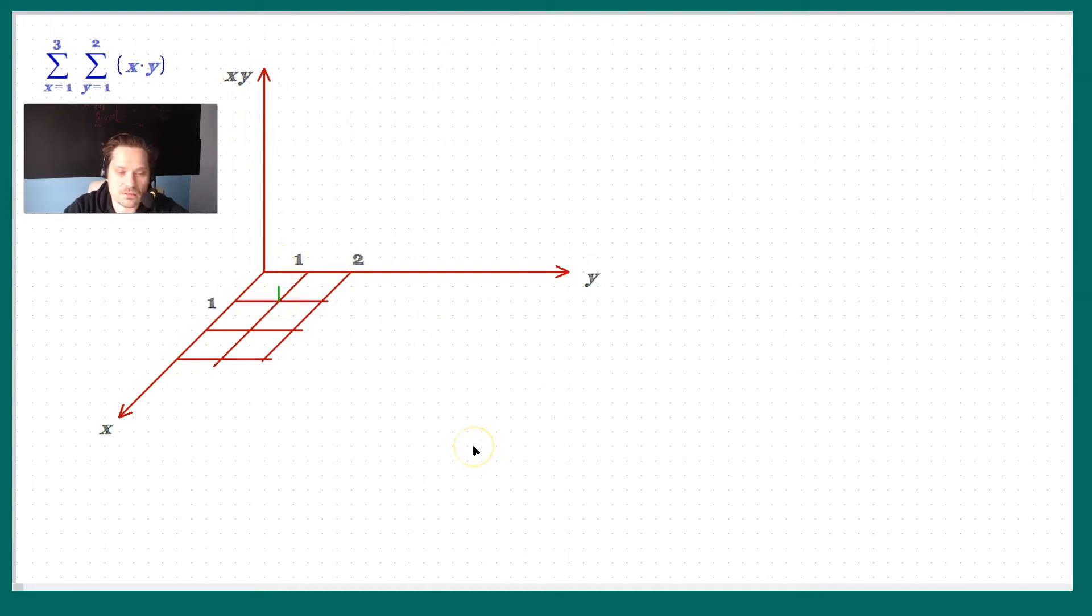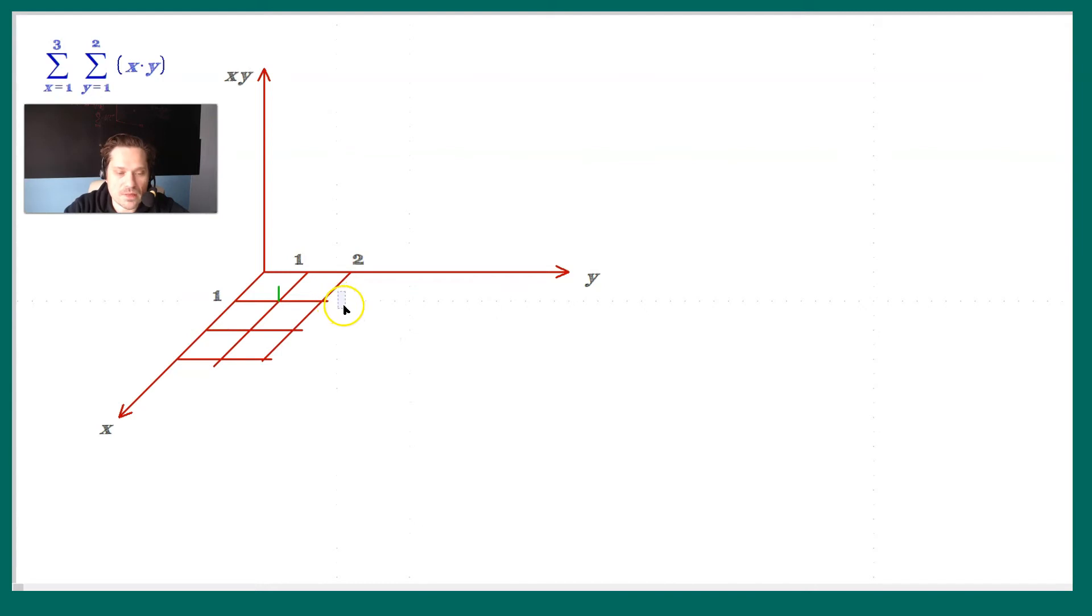Now this would be y equals 2 right here, and this is still x equals 1 in this position. So for that reason, if you think about it, the expression is x times y, so this would be the x value of 1 multiplied by 2. So you could represent that by basically taking this segment and then making two copies of it, and then stacking them on top of each other because we have a value of 2.